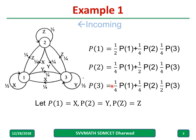And for simplicity, let probability of 1 equal to x, probability of 2 equal to y, probability of 3 equal to z.